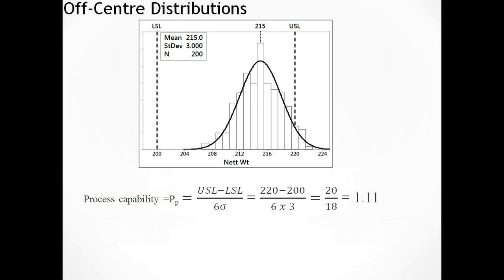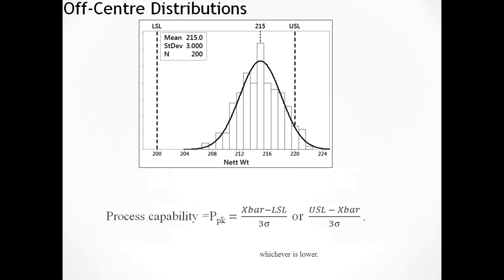And what we do, we change the name to PPK now for process capability. And what we do, we look at the distance to the nearest spec limit from the mean. So it's either X bar minus the lower spec limit divided by half of the process width, so three standard deviations, or the upper spec limit divided by three standard deviations. And we take whichever is lower. So we then use that to calculate process capability.